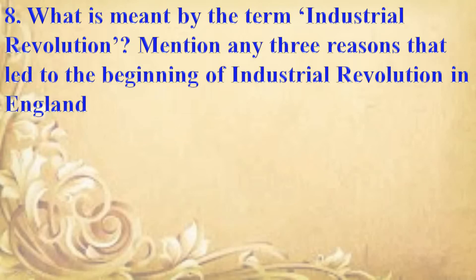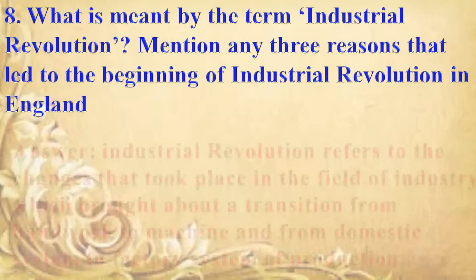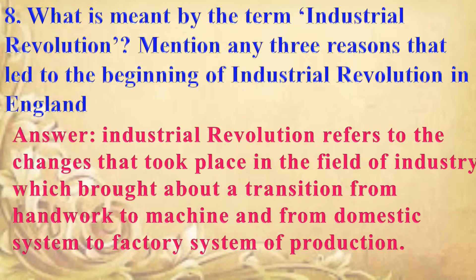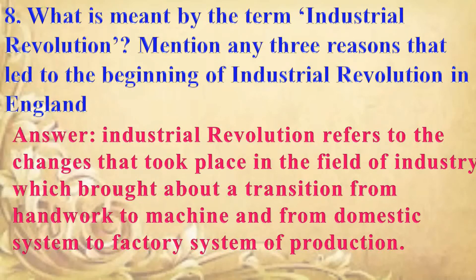Next question: what is meant by the term Industrial Revolution? Answer: Industrial Revolution refers to the changes that took place in the field of industry which brought about a transition from handwork to machine, and from the domestic system to the factory system of production.